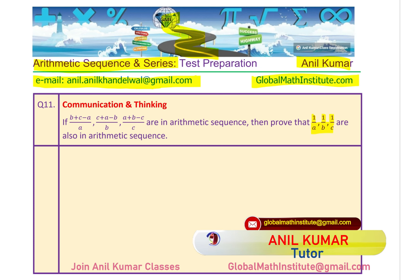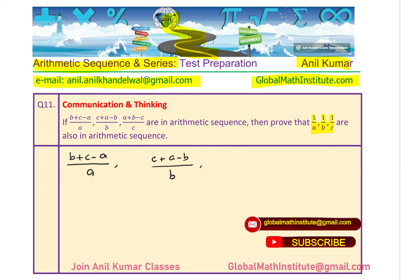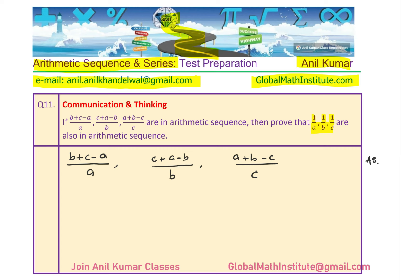There are many strategies with which you could work. We are given that (b + c − a)/a, (c + a − b)/b, and (a + b − c)/c are in arithmetic sequence — meaning they have a common difference. We can find the common difference and then see how we could go about with 1/a, 1/b, and 1/c.